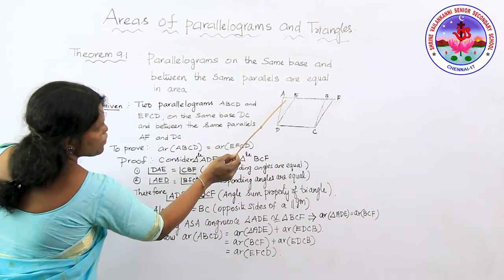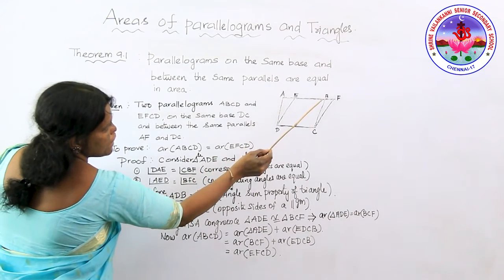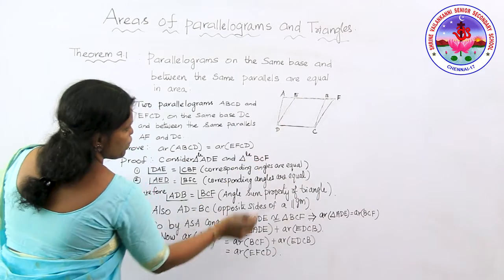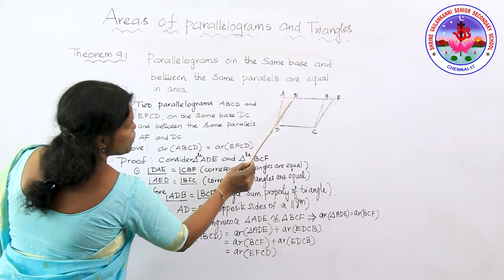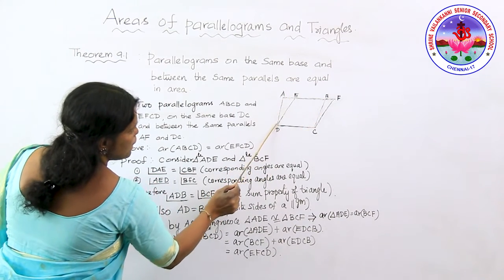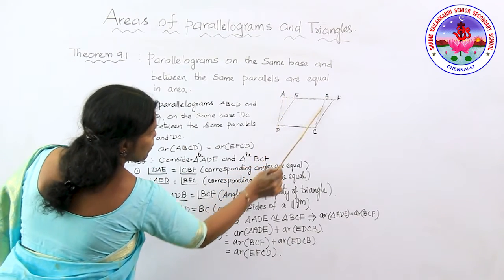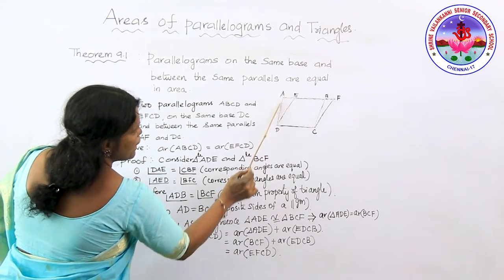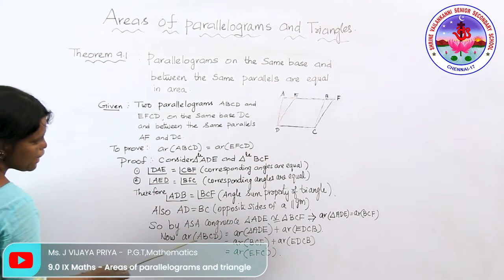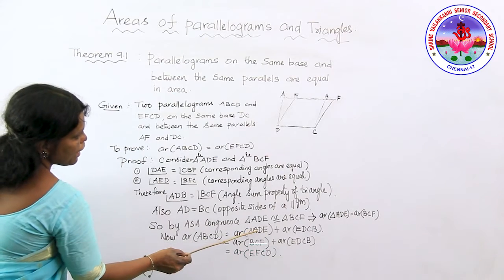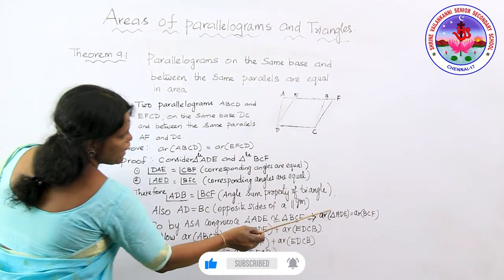By ASA congruence, triangle ADE is congruent to triangle BCF. Because of this congruence, their areas are equal — that is, area of ADE equals area of BCF. Now, coming back to parallelogram ABCD: the area of ABCD can be divided as area of triangle ADE plus area of trapezoid EDCB. So I write: area of ABCD equals area of triangle ADE plus area of EDCB.